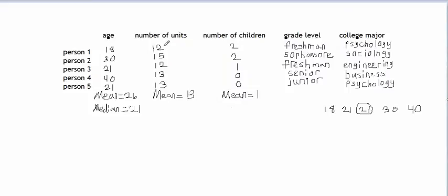How can we find the median of the data values in this column? First we have to put the values in order from lowest to highest. The middle value is 13 because two data values are below 13 and two data values are above 13. Since 13 is the middle data value, it is the median.